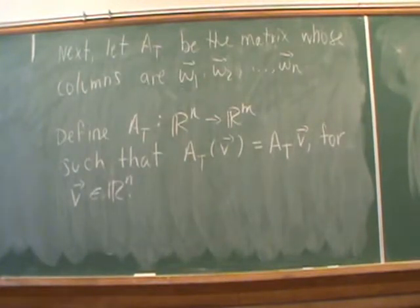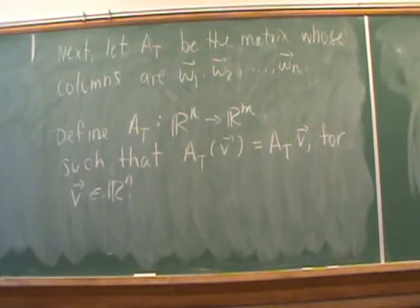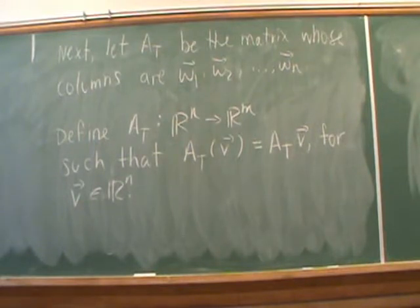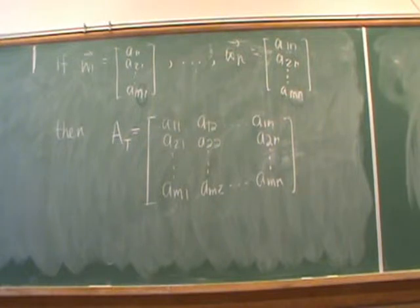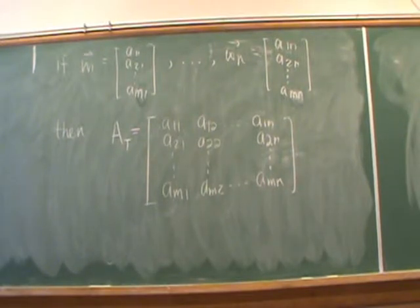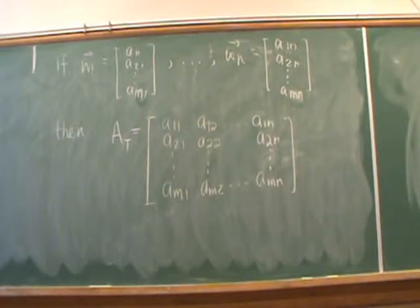Next we're going to set up the matrix A sub T. Specifically, A sub T is going to be the matrix that has columns W1, W2, up to Wn. We define a map A_T from Rn to Rm such that A_T of a vector in Rn equals the multiplication A_T times V. The vectors W1 up to Wn don't have any special properties necessarily — they're just vectors inside the vector space Rm.